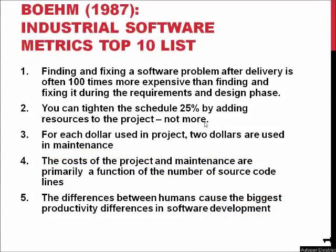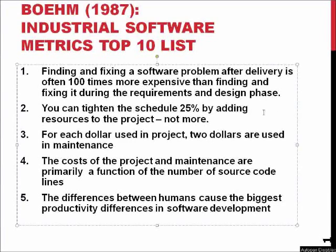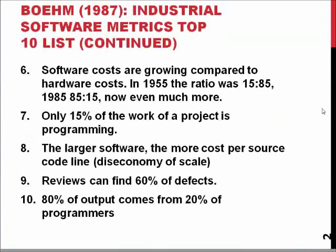Considering the list of different industrial metrics shown earlier, Boehm's Top 10 list — which tells different theorems and facts about software projects in real life — and seeing that this list is already more than 20 years old, it begs the question: how long have we actually been doing software development and software engineering research? The answer is that it's now more than 60 years.